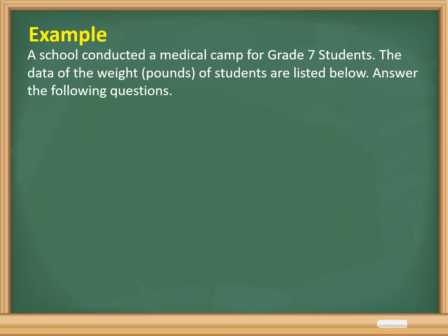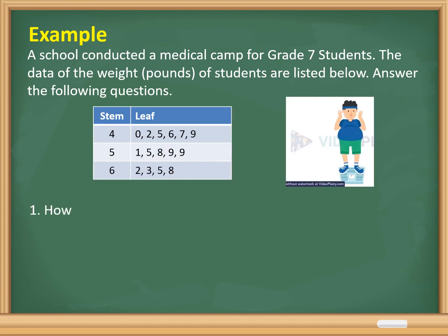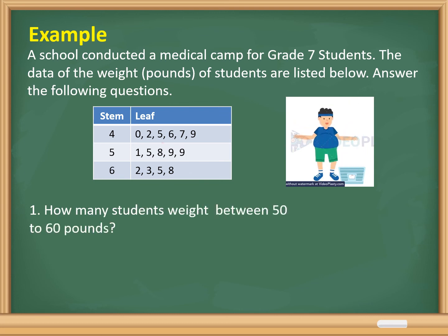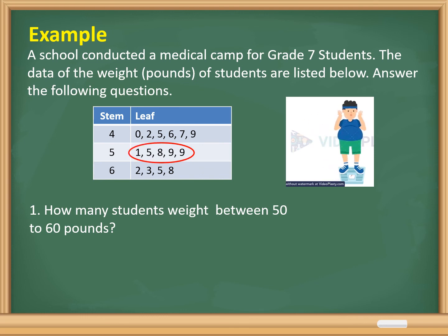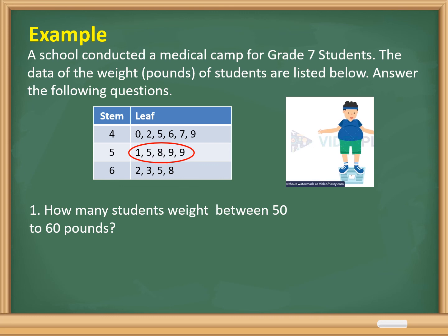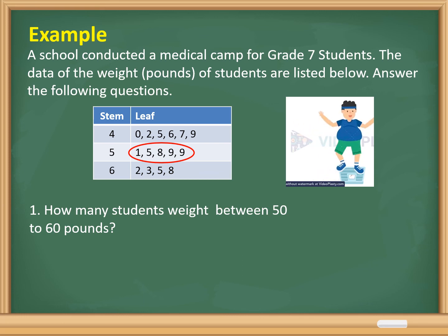A school conducted a medical camp for Grade 7 students. The data of the weight in pounds of students are listed below. Number one: how many students weigh between 50 to 60 pounds? Based on our data, the leaf values are 1, 5, 8, 9, and 9, meaning we have 51, 55, 58, 59, and 59. Those numbers are located between 50 to 60 pounds, so the answer is 5 students.